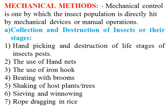The mechanical control method is one by which insect populations are directly hit using mechanical devices or manual operations, so they can be avoided, escaped, or controlled. They can be trapped through different mechanical devices. First is the collection and destruction of insects at different life stages. This includes hand-picking and destruction of live stages of insect pests. The use of hand nets is also used for catching and trapping insects.